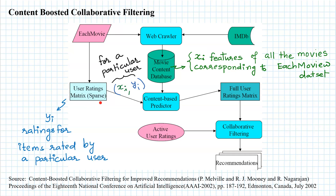Next, we use the user rating matrix to extract, for a particular user, the ratings for the items which have been rated by that user. In this way, for a particular user we can generate a dataset consisting of X_i and Y_i, where X_i is the feature vector for the i-th movie and Y_i is the rating given by the user to the i-th movie.